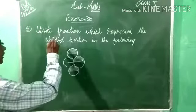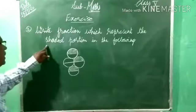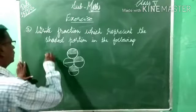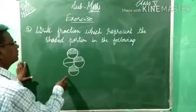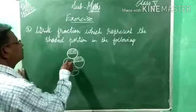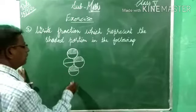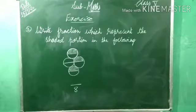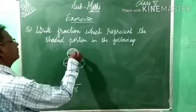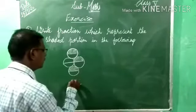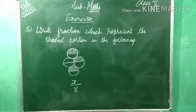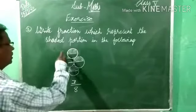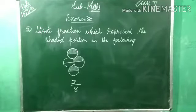Second example. Write the fraction which represents the shaded portion in the following. This diagram is given. How many equal parts? 1, 2, 3, 4, 5, 6, 7, 8 — total 8 parts. Shaded portions: 1, 2, 3. So the required fraction is 3 by 8. Note down.